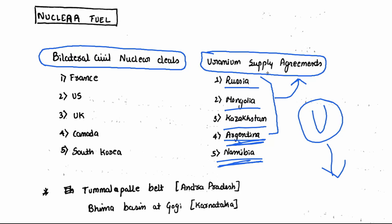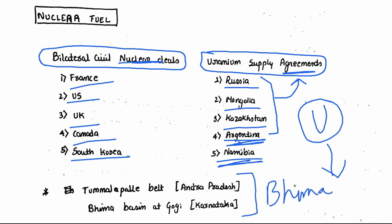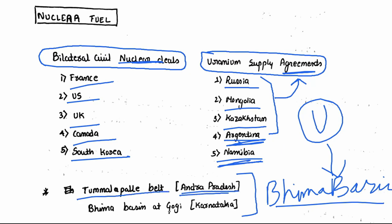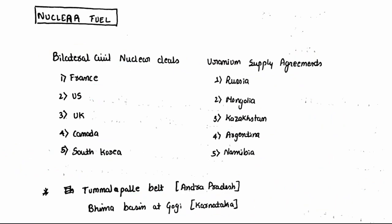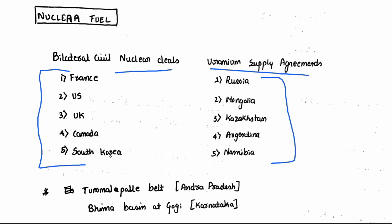Recently, two sites were discovered in the Bhima basin with uranium reserves. One is Tummampalle belt in Andhra Pradesh, and Bhima basin at Gogi in Karnataka — this is among the top 20 uranium reserves in the whole world. Nuclear deals are with France, US, UK, Canada, and South Korea.